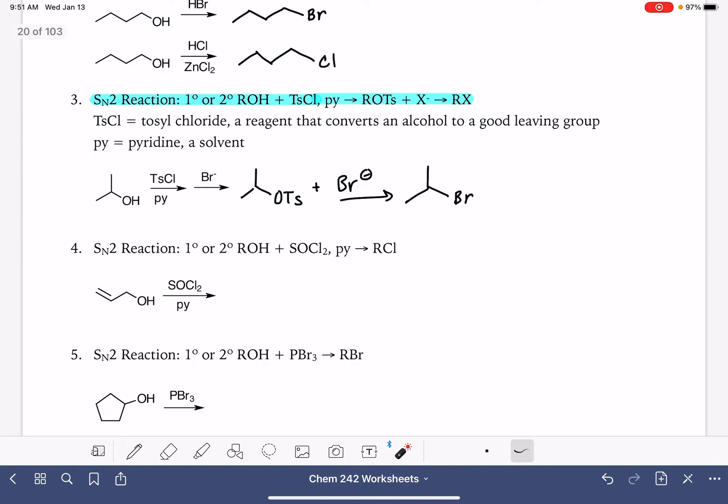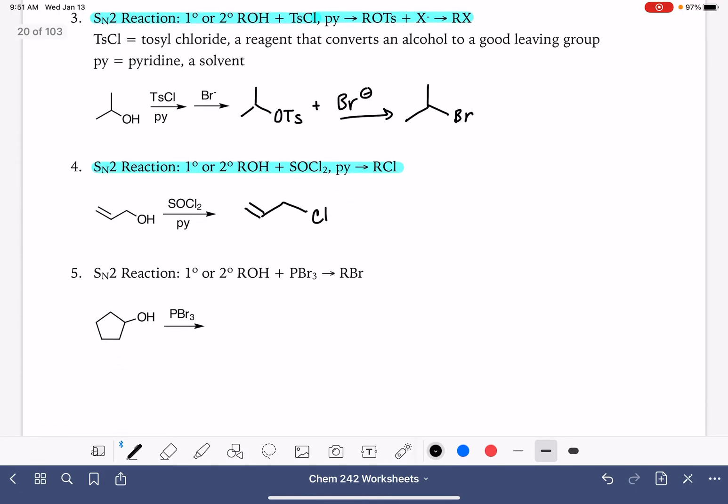Here's another SN2 reaction using a reagent that we have not used before. Primary or secondary alcohol reacting with SOCl2, thionyl chloride, produces an alkyl chloride. So this is just a magical reagent that simply replaces the OH group with a chlorine. And then we have another, what appears to be unfamiliar, but it's just another SN2 reaction using the reagent PBr3. This is a reagent that very easily converts the OH group into bromide.